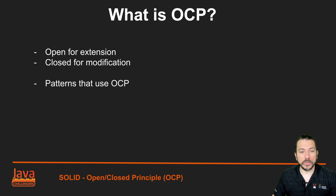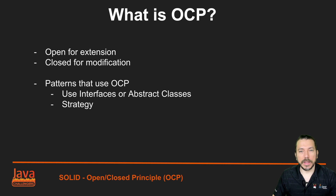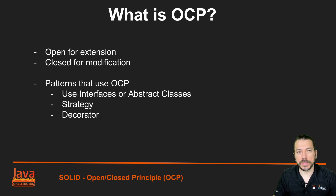What are the patterns we use with OCP? You're going to see that we use interfaces and abstract classes very often when using the OCP principle, because then we can pass the implementation of a method to a class or to another method. You're also going to see the OCP principle in the Strategy design pattern and in the Decorator design pattern. I'll leave links to those design patterns in the description.